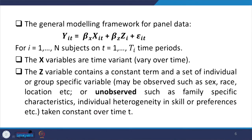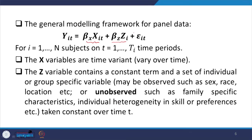The general modeling framework for panel data includes time variant X variables and individual or group-specific Z variables — usually sometimes unobserved, like sex, race, location, or unobserved variables such as family-specific characteristics, individual heterogeneity, skill preferences, etc. — which are taken as constant over time and do not vary over time. Broadly there are two components: the time component and the cross-section component having no time variance, together with the epsilon term — these are called panel models.